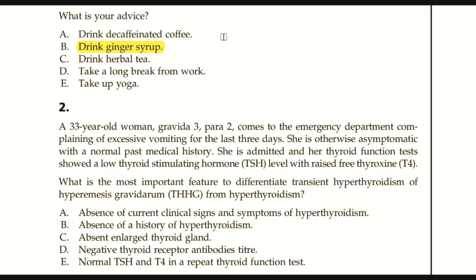Question number two: A 33-year-old woman, gravida three para two, comes to the emergency department complaining of excessive vomiting for the last three days. She is otherwise asymptomatic with a normal past medical history. She is admitted and her thyroid function test shows low thyroid stimulating hormone levels and raised T3/T4 levels. What is the most important feature to differentiate transient hyperthyroidism of hyperemesis gravidarum from true hyperthyroidism? Options include: absence of clinical signs/symptoms, absence of clinical history, absence of enlarged thyroid gland, negative thyroid receptor antibodies, or normal TSH and T4 on repeat testing.